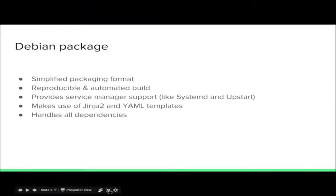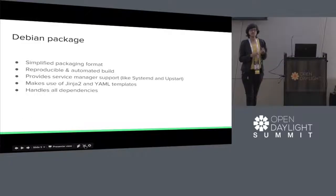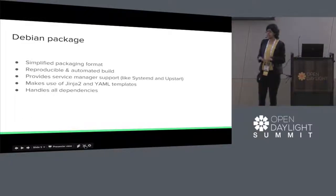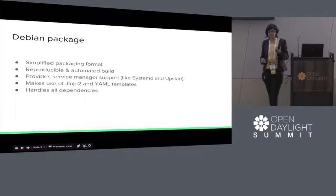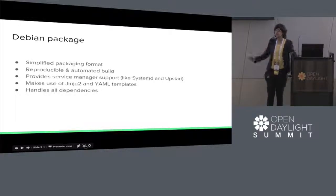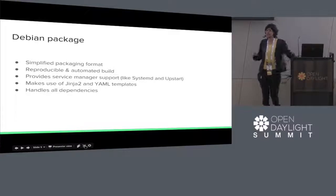This .deb package handles all the dependencies. For Boron, the dependency is Java 8 — it will be automatically included. For Beryllium, it's Java 7 — it will again be included. So we don't need to install Java 8 and Java 7 separately.